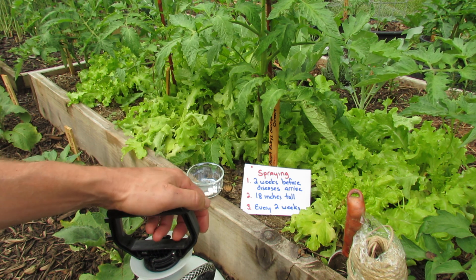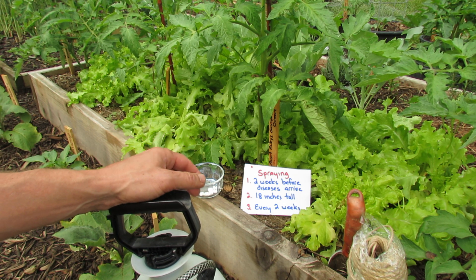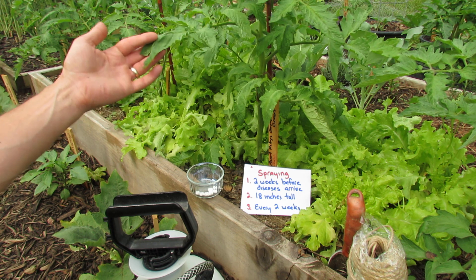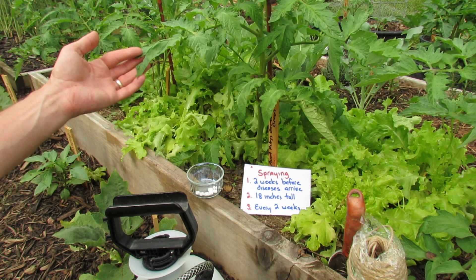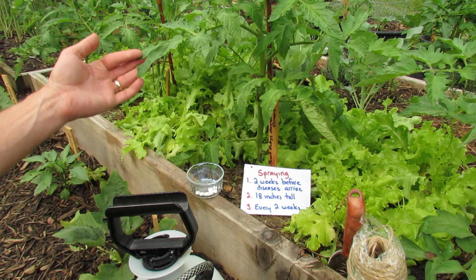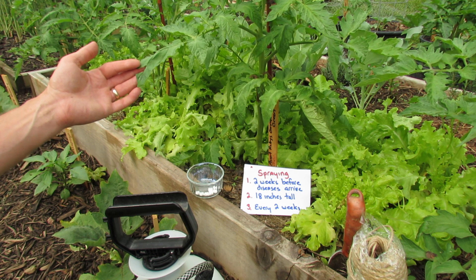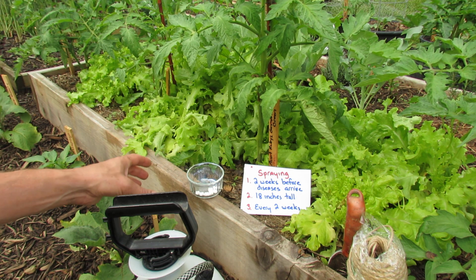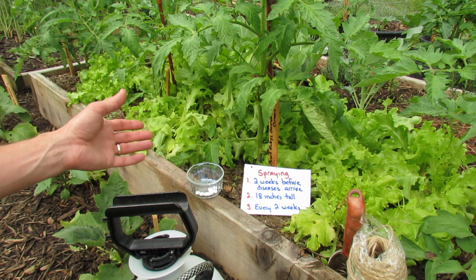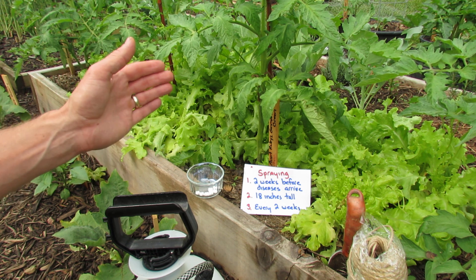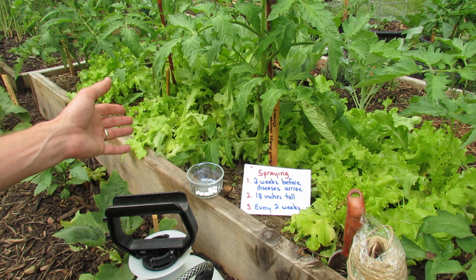When do I do mine? I do mine about two weeks before the diseases arrive — I know when they start. You definitely want to start this before the disease lands on your tomato plant, so about two weeks early. Also, if you want a guideline, by the time the plant is 18 inches tall you want to start this process. Again, some people start it in the planting hole and throw an aspirin in right away — that's okay too. But you really want to make sure you start it two weeks before the diseases arrive or when the tomato is 18 inches tall.